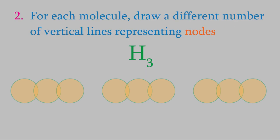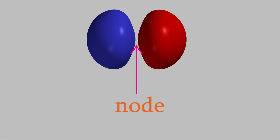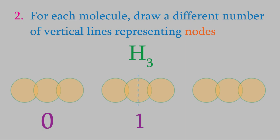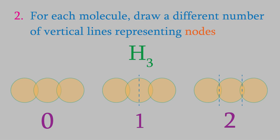In the second step, we draw vertical lines in each picture, which represent the location of nodes in the molecular orbitals. You might remember that some MOs have nodes, like the σu* orbital we saw when we looked at the H2 molecule in the last video. Each molecular orbital will have a different number of nodes. The first picture will have no nodes, so we draw no vertical line on that one. The second will have one node, which will divide the molecule into two halves, so we draw one vertical line in the center. In the last, we have two nodes, so we draw two vertical lines that divide the molecule into thirds.